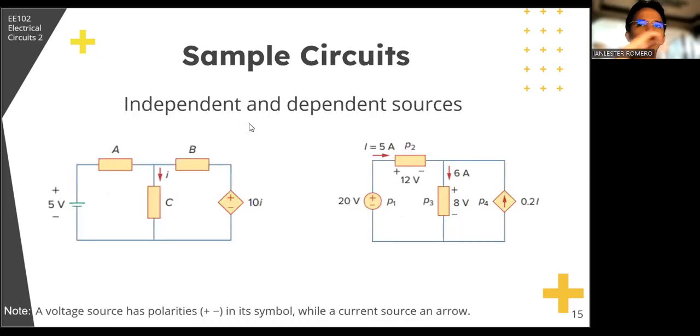Here are sample circuits that illustrate this, that have both independent and dependent sources. There's an independent source, a battery of 5 volts, and a dependent voltage source of 10i. This i, where is it? This current here, going through element C. This means the voltage here depends on the value of the current through element C. So if you adjust the current here, then it will adjust the voltage here. Another is this one. An independent voltage source, 20 volts, so DC. Then, a dependent current source. Where does it depend? 0.2i. Where's the i? Here. It depends on this. The value of this current source depends on the current of this voltage source.